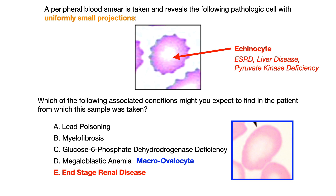The purpose of this question is not only to teach you about pathologic red blood cells, but to constantly reinforce the idea that if you don't know the correct answer, that doesn't mean you cannot eliminate incorrect answers based on what you already know and have already studied.